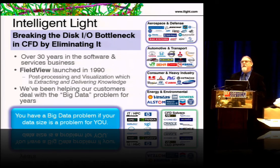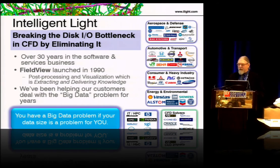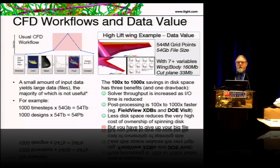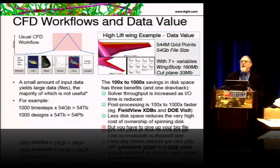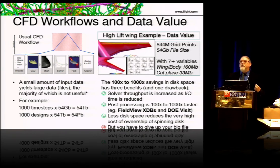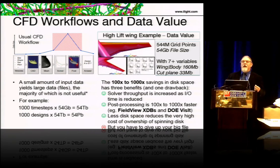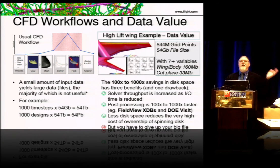We've been seeing this for about 20 years because computers can always produce data faster than people can move it around their network or copy it or do things with it. In CFD workflows, you start with a small amount of data — like the shape of a car — put it into a good HPC resource, and end up with gigabytes of files. Most of that file content was needed for calculation but not for extracting knowledge. If you want to know the drag on a car or airplane, you're really concerned with the surfaces, and that's less than 10% of the data in the whole file.